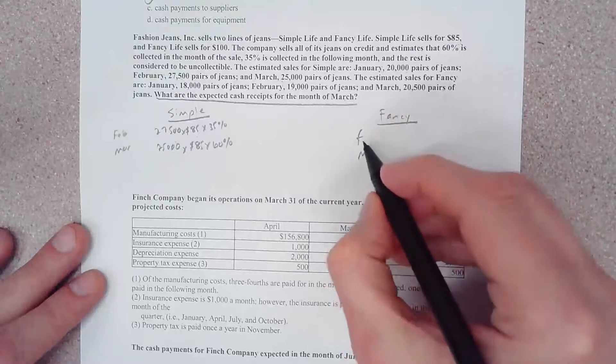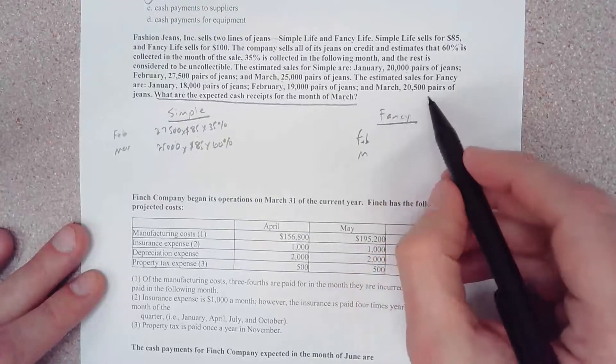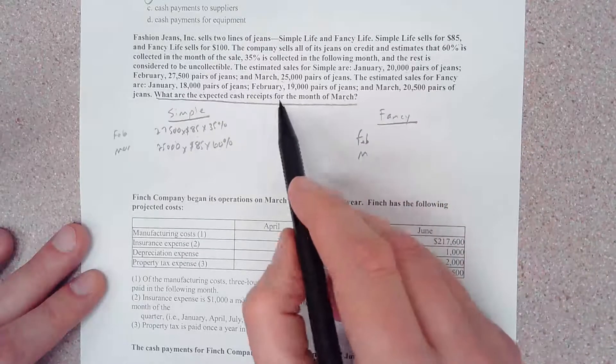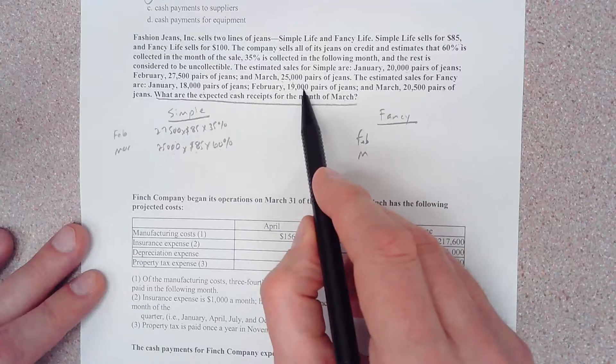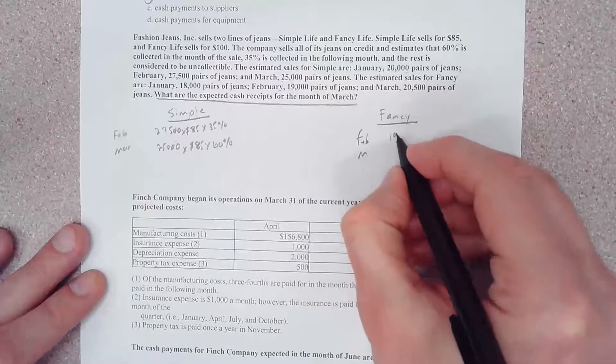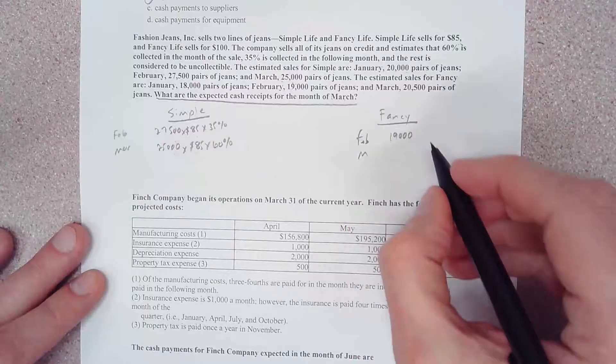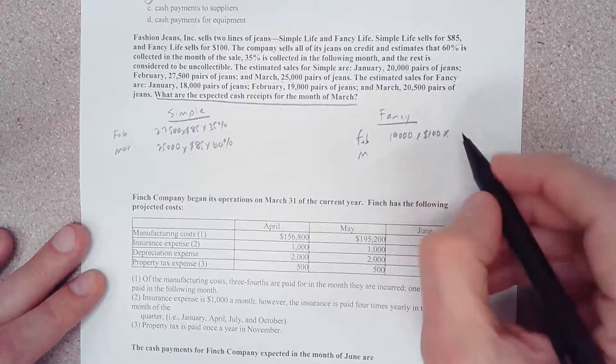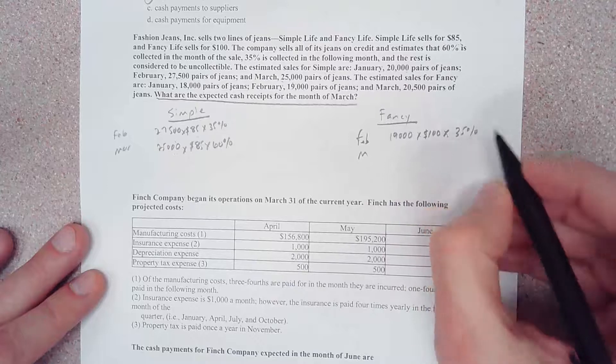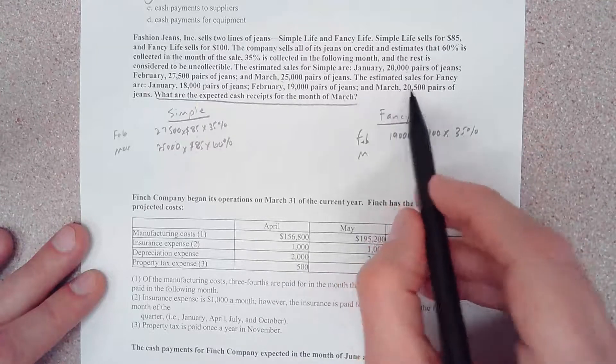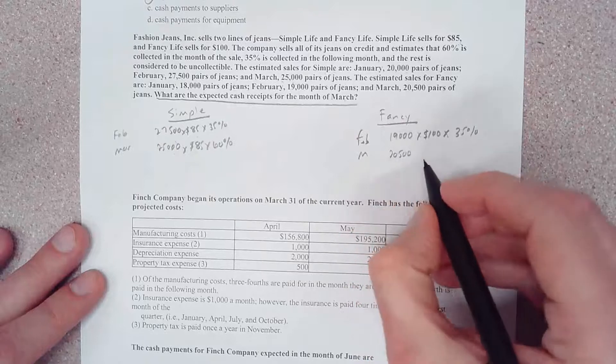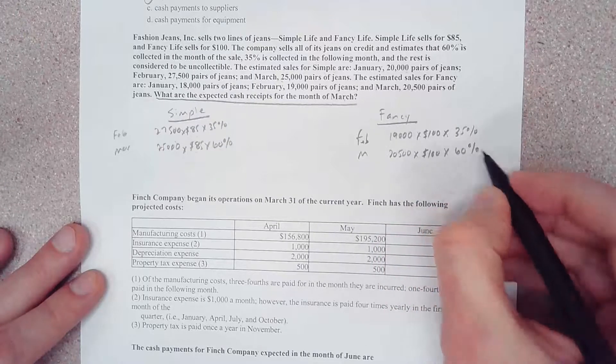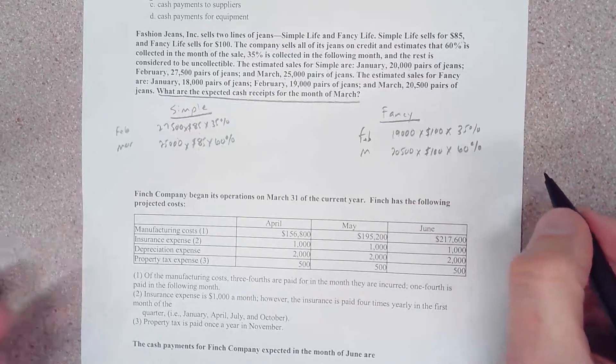This F right here stands for February. For Fancy, we sold 19,000 pairs of jeans in February, and we're selling those for $100 a pair. In the month of March we're going to collect that same 35%. It looks like we sold 20,500 pairs in the month of March times $100 per pair times 60%.